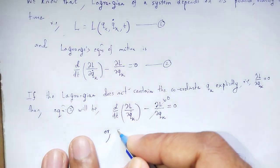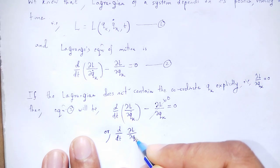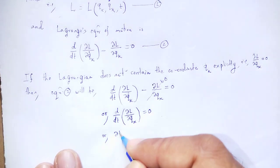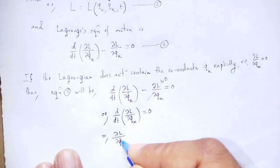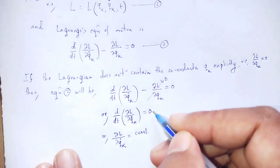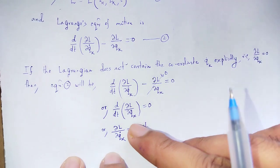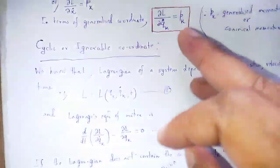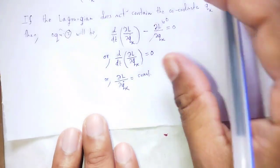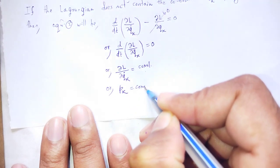This gives d/dt of (del L / del q-dot_k) = 0. That means del L / del q-dot_k is constant with respect to time. Since del L / del q-dot_k is the generalized momentum p_k, we conclude that p_k is equal to a constant.